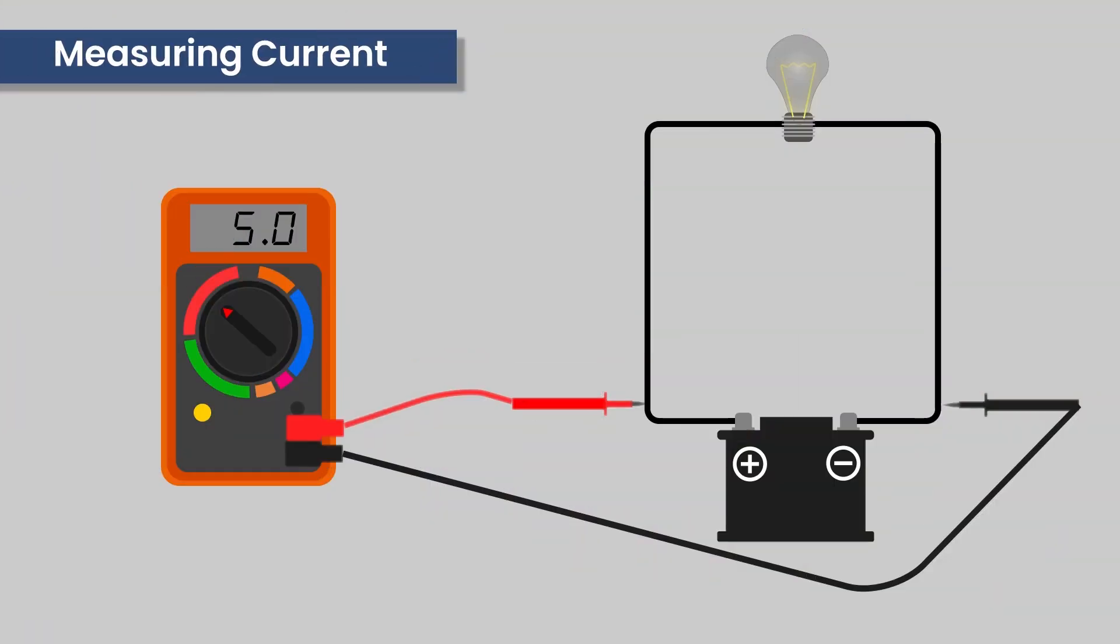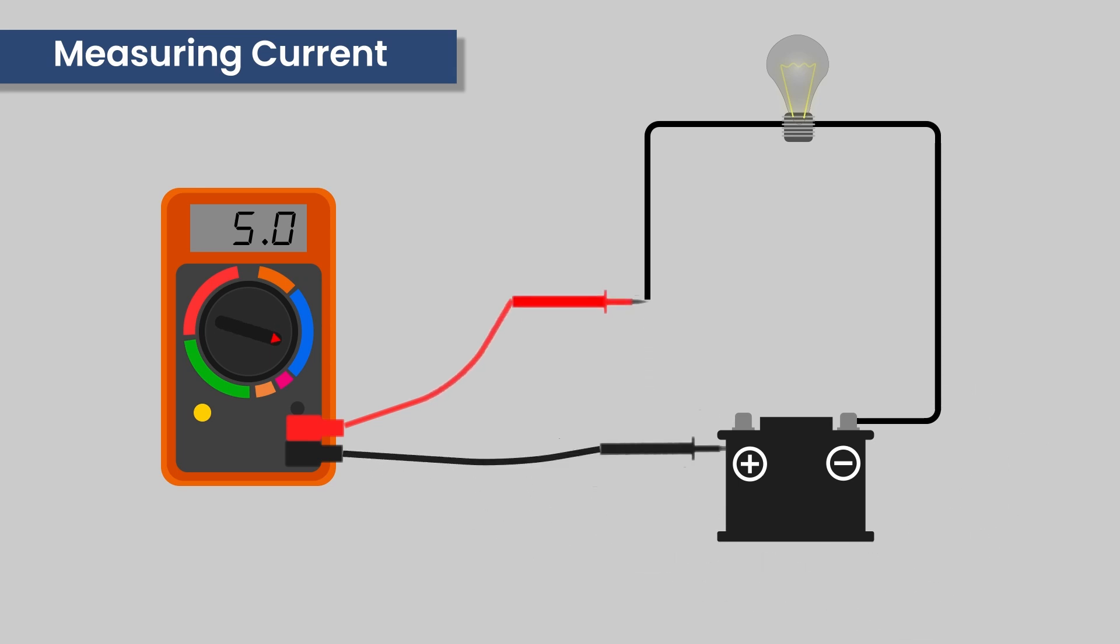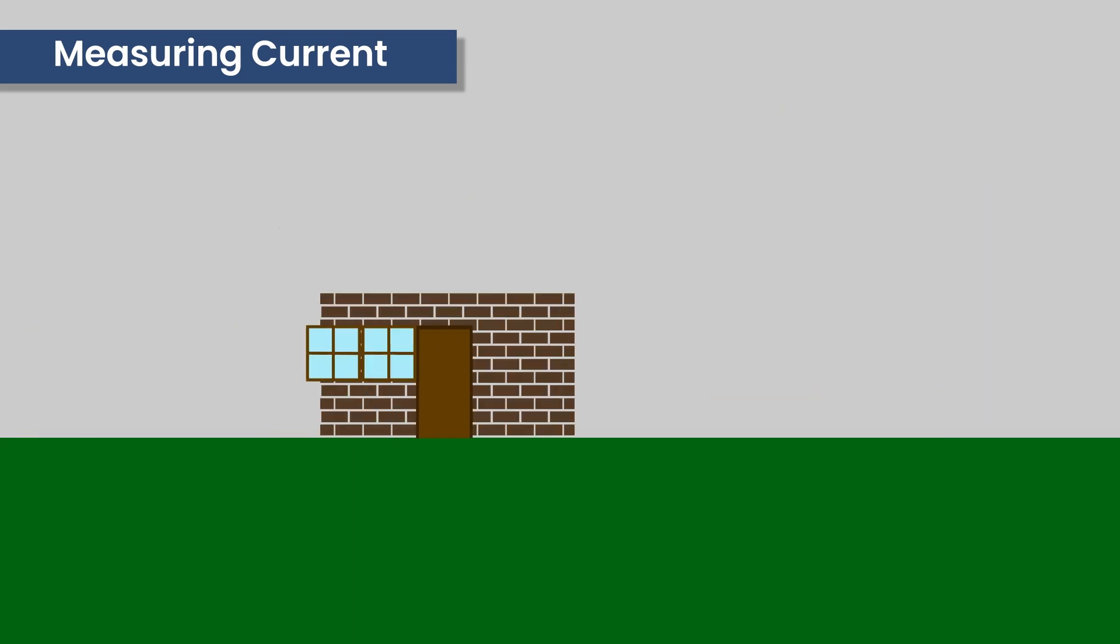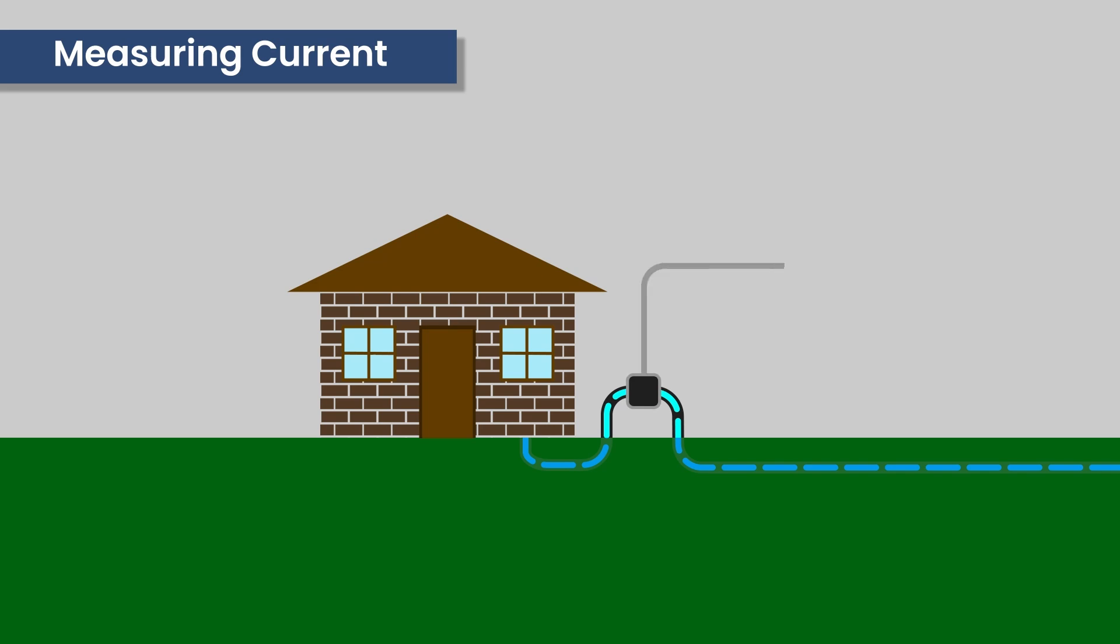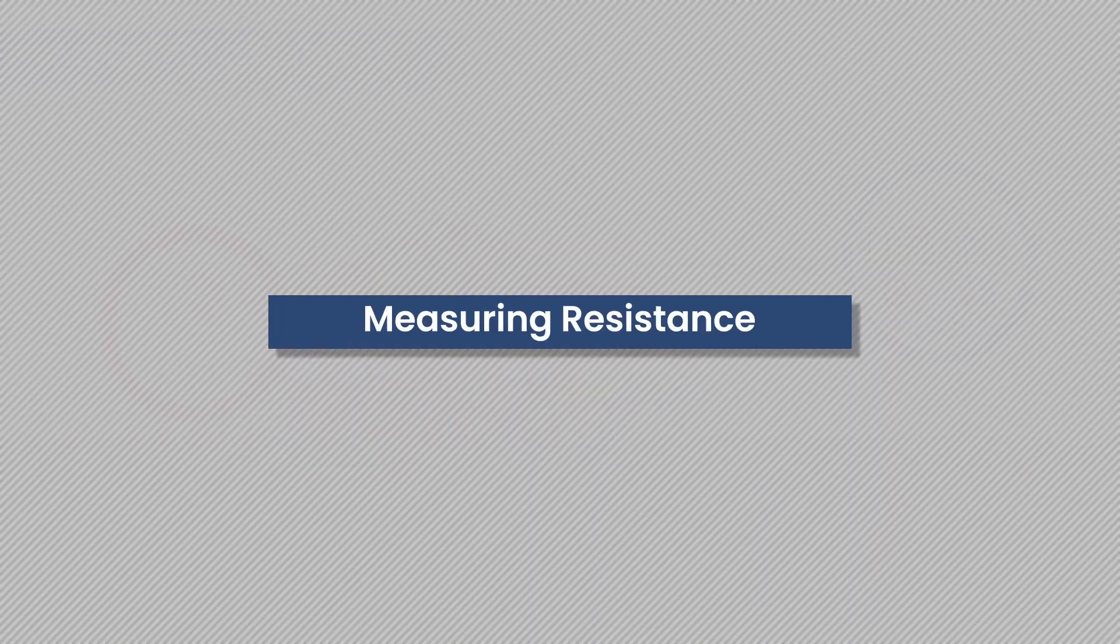Measuring current: in this case the multimeter is always connected in series with the current it is measuring. When using a digital multimeter and the polarity is incorrect, the results will be displayed as negative. The way it works is similar to a water meter of a house - it is connected to the main supply of the house just like a multimeter is connected in series. When a tap in the house is turned on, the counter on the water meter measures the amount of water flowing through the pipe.